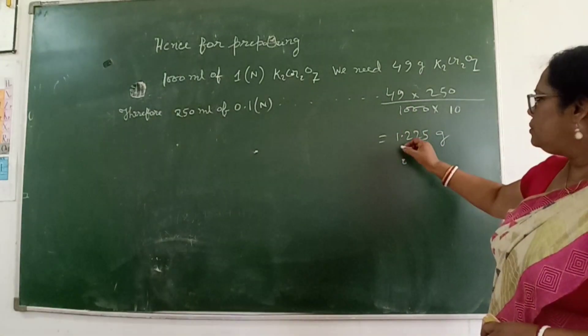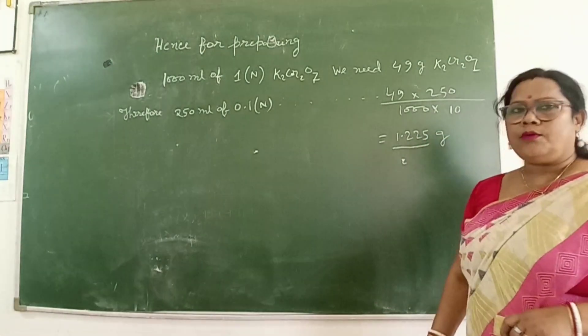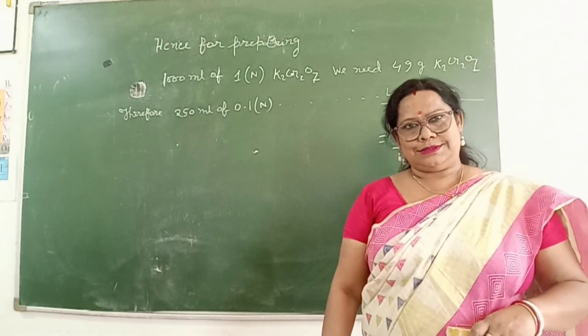So, we weigh out 1.225 gram of potassium dichromate crystals. Thank you.